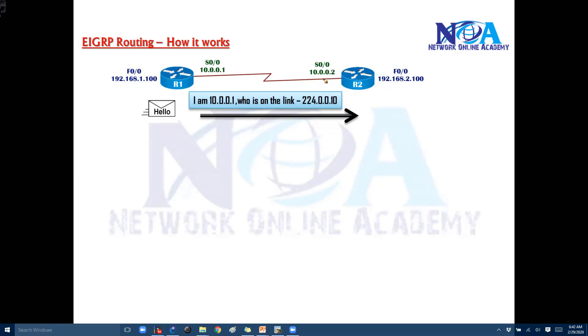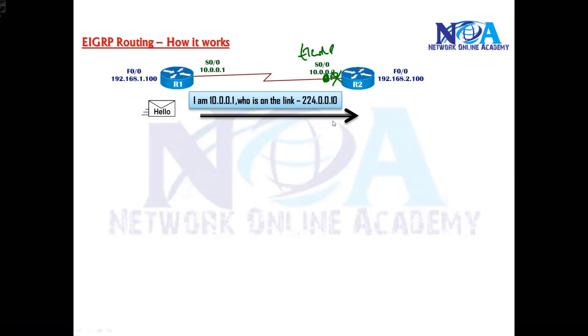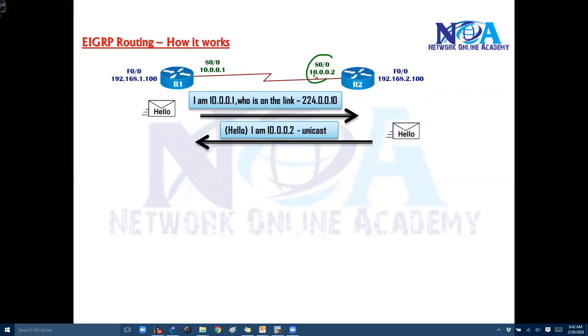But once we configure EIGRP on this interface as well, then it will listen to those hello messages and it is going to reply back with again the hello message. And most likely the reply will always be unicast. It's going to send out its own IP, like whatever the interface IP, and that will be the identifier here. And the reply always comes as a unicast.